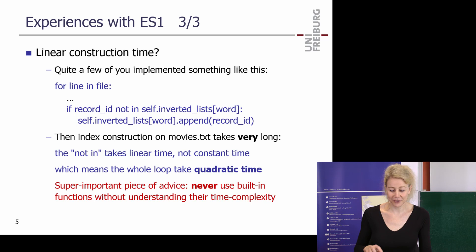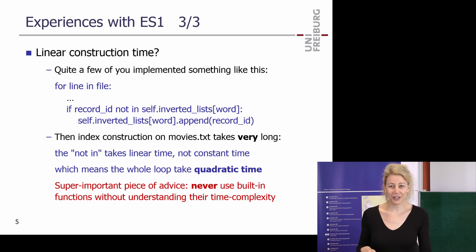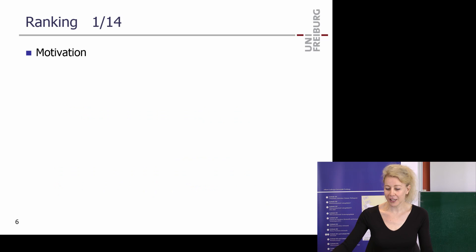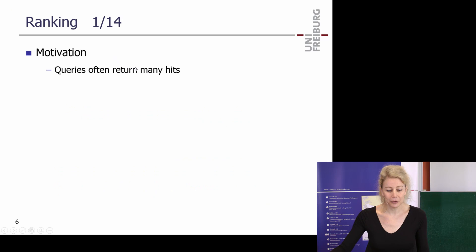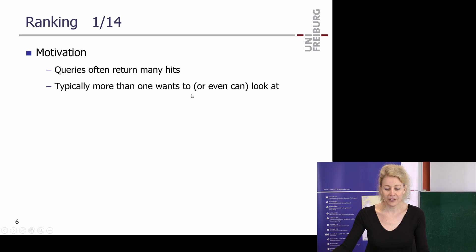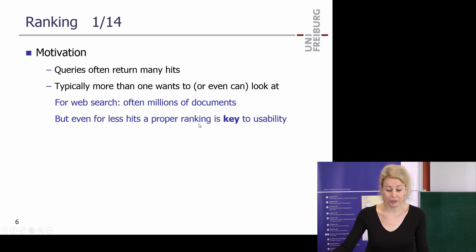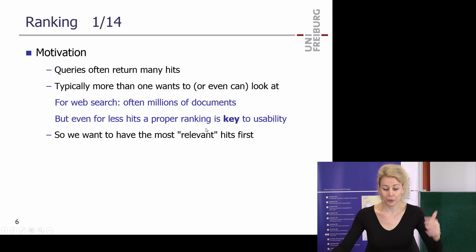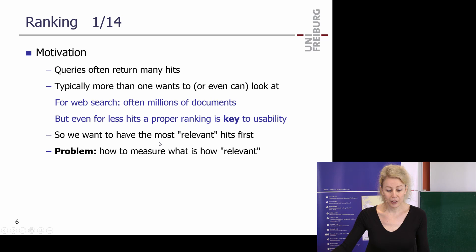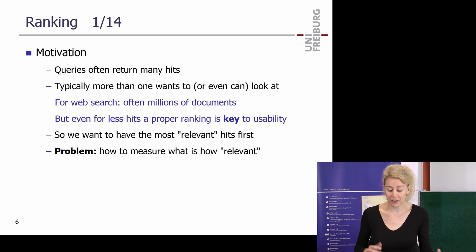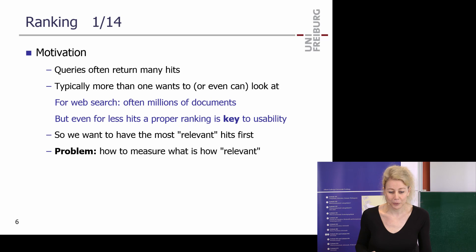So today we talk about ranking. It's of course super important — you saw that with your simple search engine which didn't do ranking. Often you get many hits, typically more than you can even look at. For web search that's millions of documents. You have something in mind, you want it on top and not number seven, like Shawshank Redemption. So we want to have the most relevant hits first. The big problem is how to measure what is relevant — it's a fuzzy concept. You have to guess what the user had in mind when searching and figure out what's relevant to that search intent.